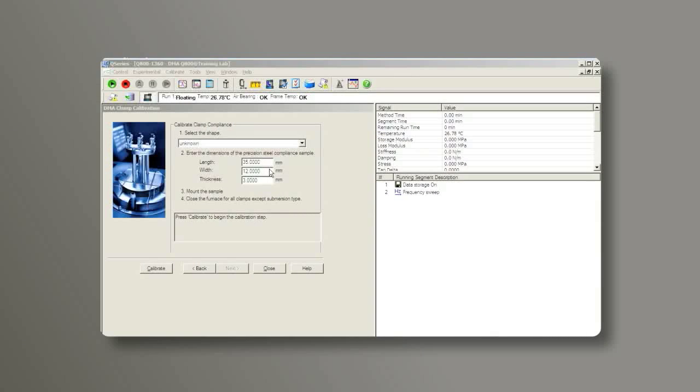Enter the dimension of the steel bar to the software. Please remember, the length of the steel bar is the length of the clamp. Then, click on Calibrate.